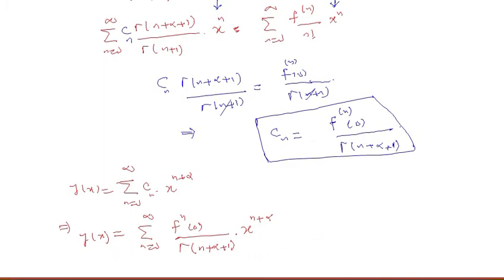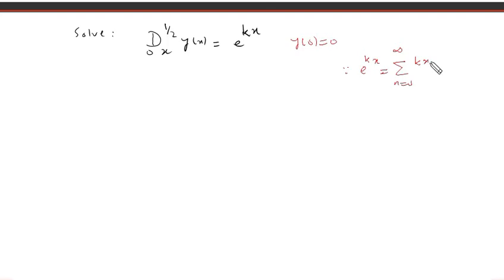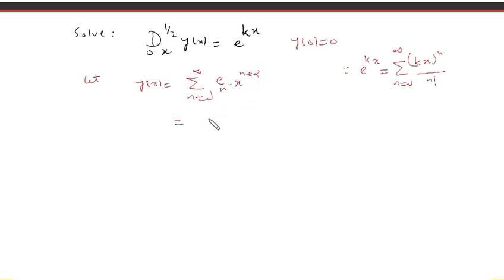Let's take one example to illustrate. Solve the differential equation: the fractional derivative from 0 to x of order 1/2 of y(x) equals the exponential function e to the power kx, with initial condition y(0) equals 0. Since we know that e to the power kx can be written as the summation from n=0 to infinity of (kx) to the power n over n factorial, and we assume y(x) equals the summation from n=0 to infinity of c_n times x to the power n plus alpha, with alpha equal to 1/2, this becomes the summation from n=0 to infinity of c_n times x to the power n plus 1/2.